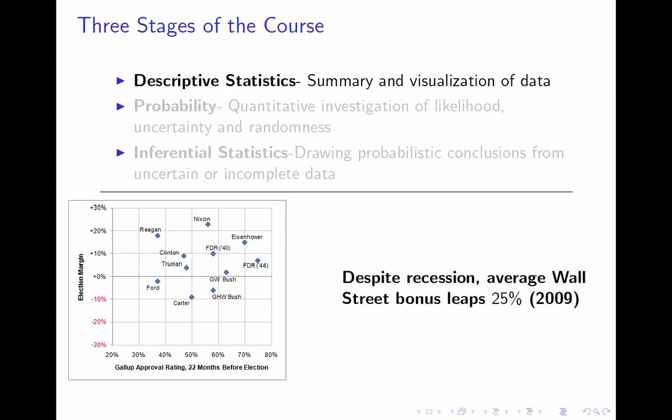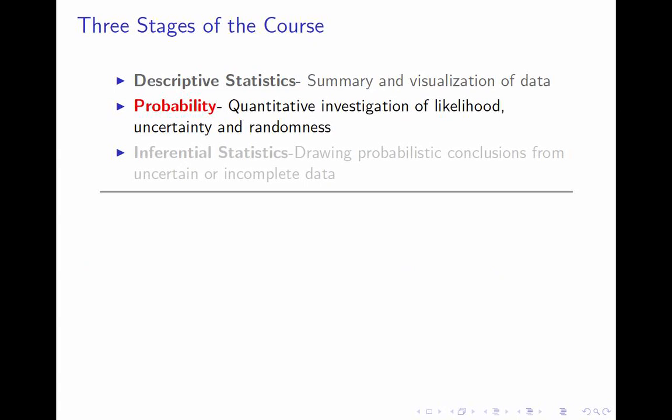For example, this chart relates the approval rating of presidents 22 months before their election with the eventual margin by which they won or lost. This sentence is taken from a newspaper in 2009 discussing Wall Street bonuses during the recession. The second quarter of the course will be devoted to probability — the quantitative investigation of likelihood, uncertainty, and randomness.